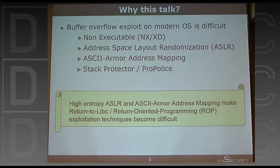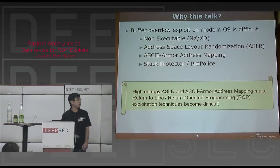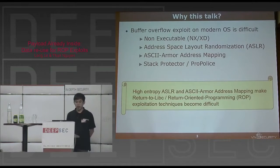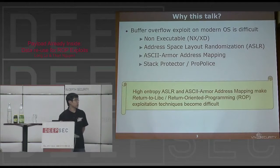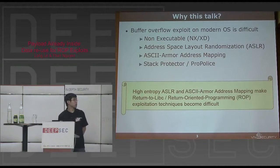So why is the talk on this one? Most modern operating systems nowadays have a lot of different protections for security vulnerabilities. You can see there is non-executable with NX, address space layout randomization, ASCII armor address mapping, stack protector, and various compilation protections. All of these protections make exploitation harder, and especially for techniques like return-oriented programming, really good address space randomization makes it pretty hard to do.